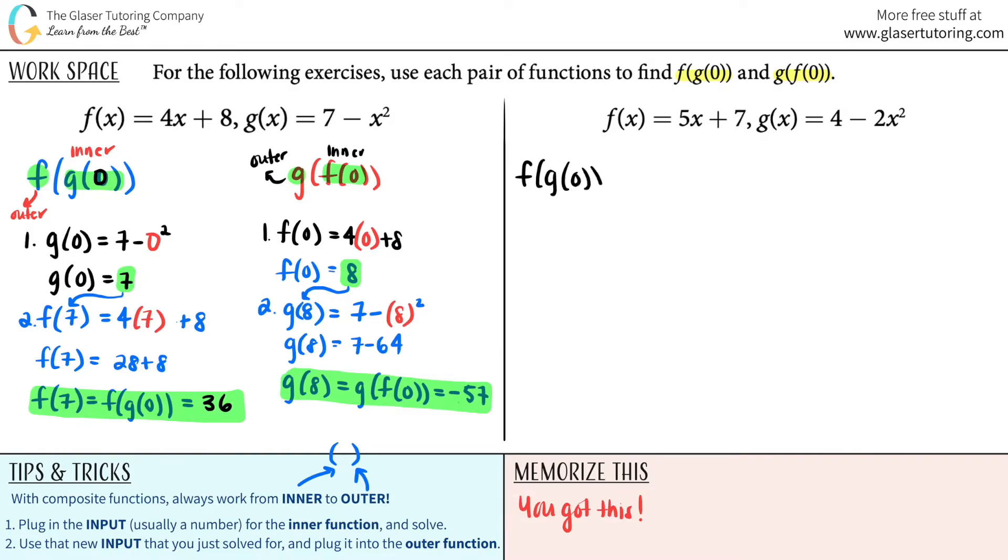f of g of 0. Okay, well, inner is the g function. Outer is the f function. So we got to work from inner to outer. So number 1, g of 0 is. The new g function is this. 4 minus 2x squared. So wherever there's an x, I'm going to plug in a 0. So it would be 4 minus 2 times 0 squared. Okay, well, g of 0 equals 4 minus 0 squared is 0. 0 times 2 is 0. So g of 0 would just be equal to 4.